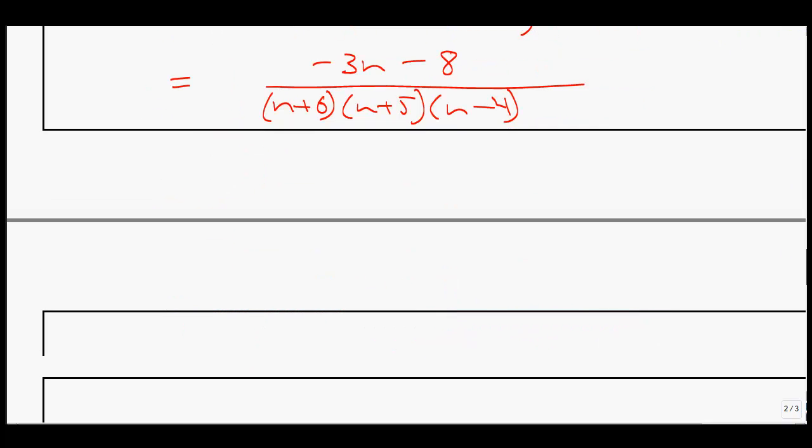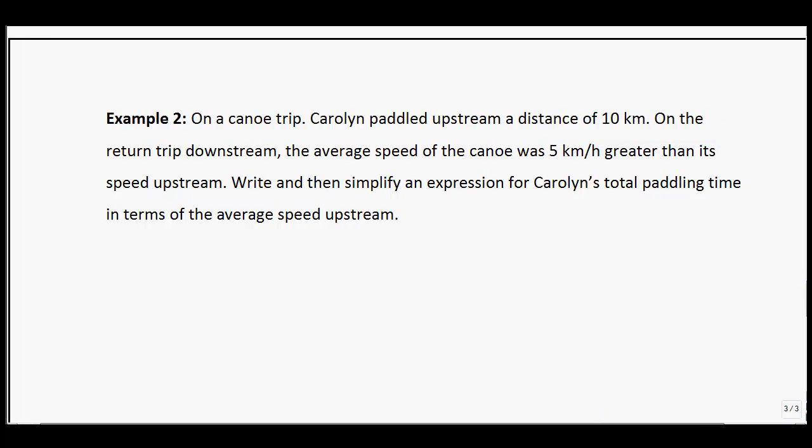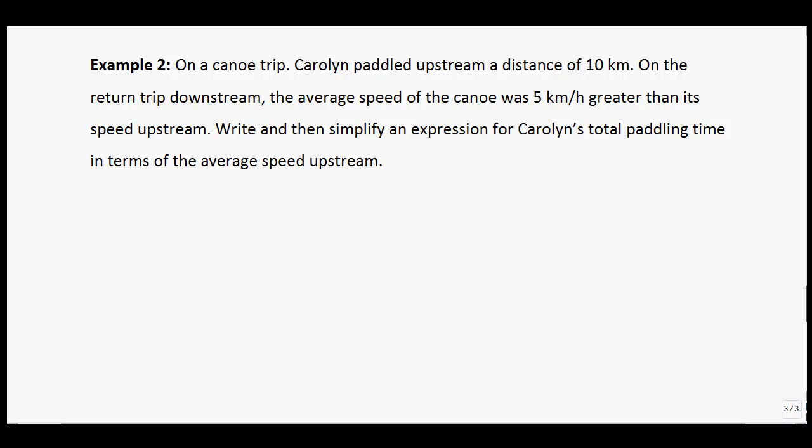Last thing I have to end off with you guys is example 2, and it's a word problem. This is where we're going to be getting in our last lesson. I just thought it might be good to break you in a little bit right now. We're going to be dealing with applications when you get to 7.6. Right now we're just setting up a question. When we get to 7.6, we'll be solving a question like this. Example 2 reads: On a canoe trip, Carolyn paddled upstream a distance of 5 kilometers. On the return trip downstream, the average speed of the canoe was 5 kilometers per hour greater than its speed upstream. Write and then simplify an expression for Carolyn's total paddling time in terms of the average speed upstream. Recall that time is equal to the distance divided by your average speed.